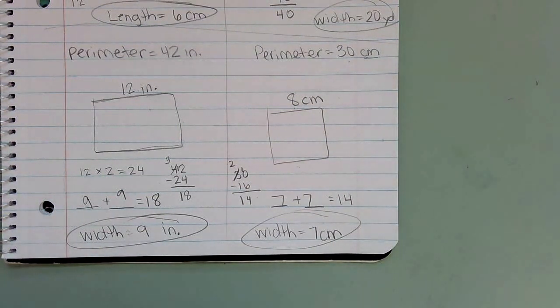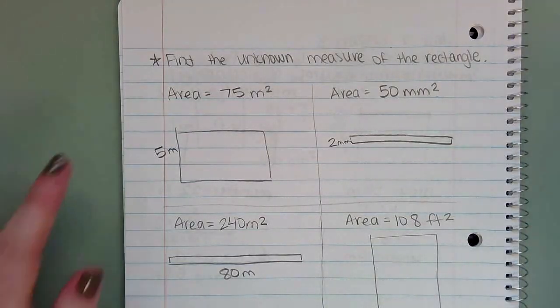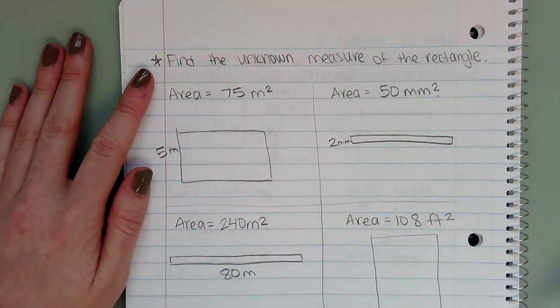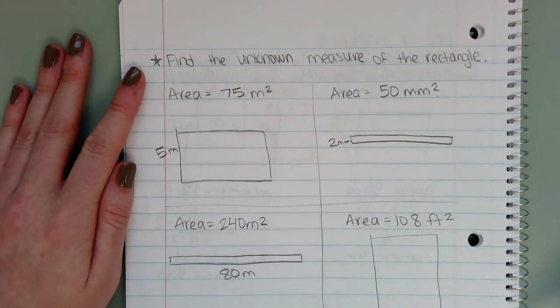Next we will do some area — figuring out the unknowns for area. Our directions say find the unknown measure of the rectangle.